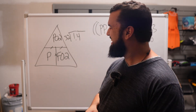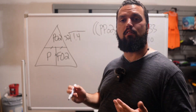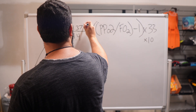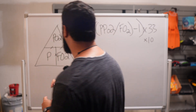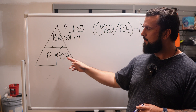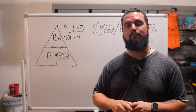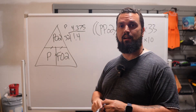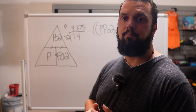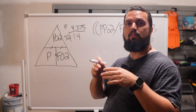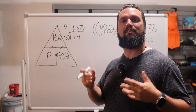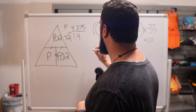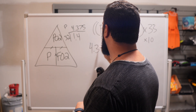1.4 divided by 0.32 equals 4.375 atmospheres. That is our P value — we took our PPO2 divided by our FO2 and got our pressure of 4.375 atmospheres. The next step is to subtract 1 from that number. We subtract 1 to remove the weight of the atmosphere itself — we just want the pressure of the water.